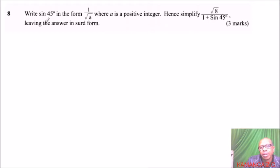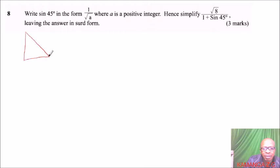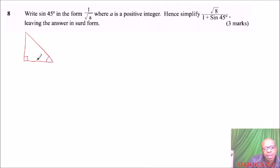So 45 is a special angle, and we can find that angle by using the right-angled isosceles triangle, like this one. This is a right angle, so this side is equal to that. We can say this is 1 and this is 1. So this is 45 and this is 45 degrees.